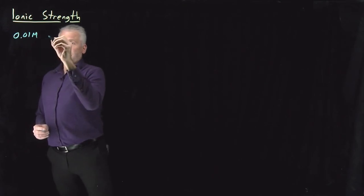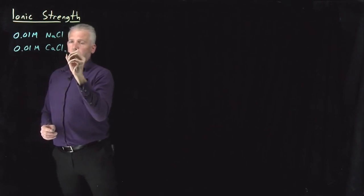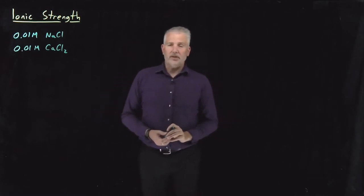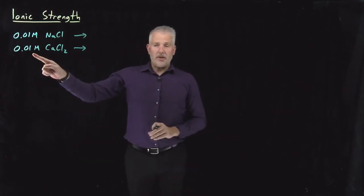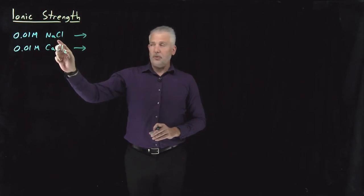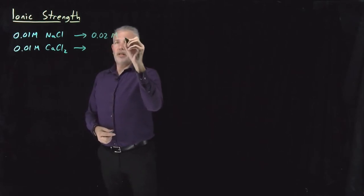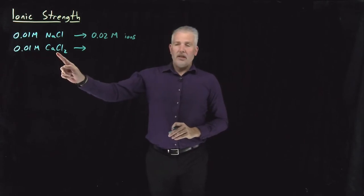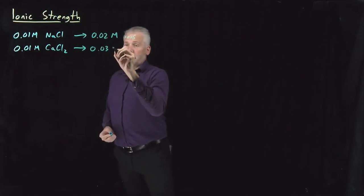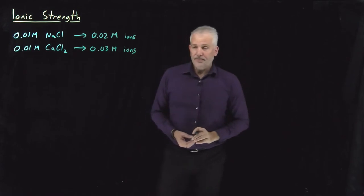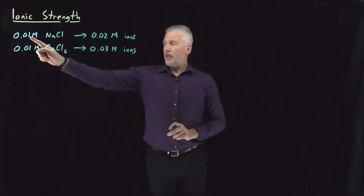Suppose we consider two solutions: one that's 0.01 molar in sodium chloride and one that's 0.01 molar in calcium chloride. In terms of just the concentration of the salt, they look like they're the same concentration, but of course that's misleading. Sodium chloride dissolves into one cation and one anion, generating a solution that's 0.02 molar in ions altogether, whereas calcium chloride dissolves into one cation and two anions, generating a total concentration of 0.03 molar in ions. Already we can see the concentration of ions in the two solutions are different, even though the nominal concentrations are the same.